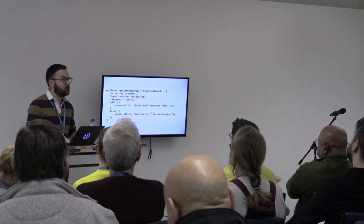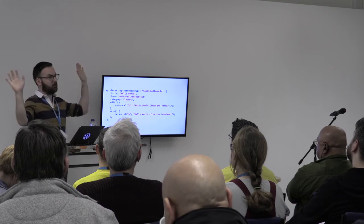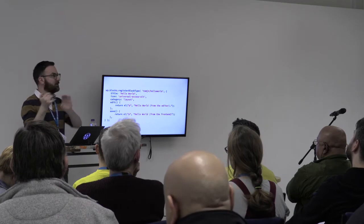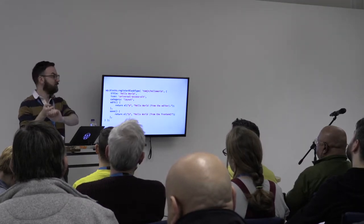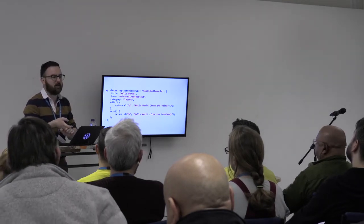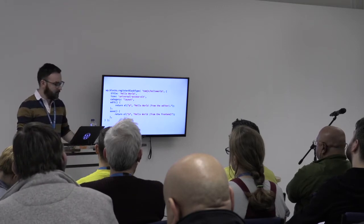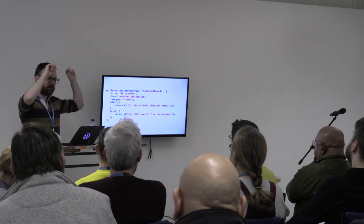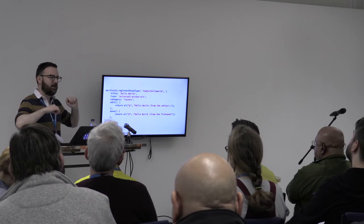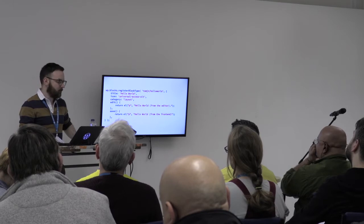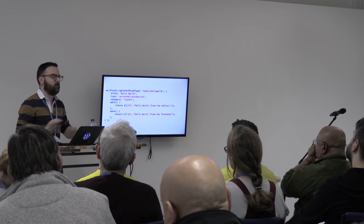The icon — 'universal-access-alt' — that's dashicons. Whenever I go to insert that block, it will have it in the list and use the icon that maps to that name. There are useful websites that list all of them out, and you can click on one and get the CSS, the SVG, or just the name. There are lots of different ways you can use those, like sidebar menus in the admin.